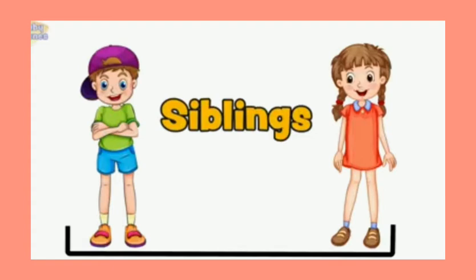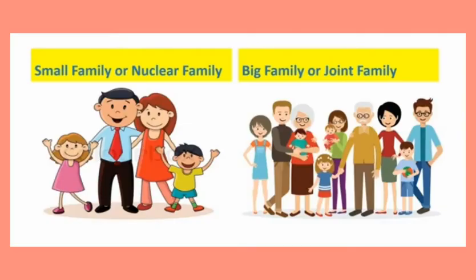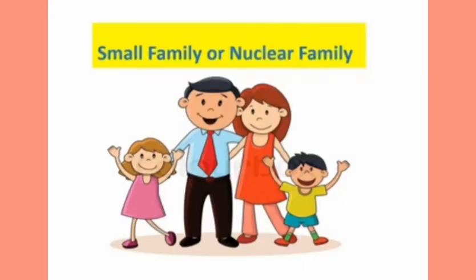There are two types of families: small family and big family. A small family consists of parents and their children. It is also called a nuclear family.